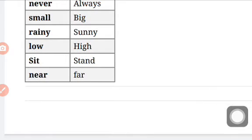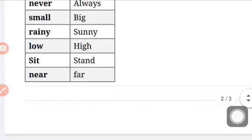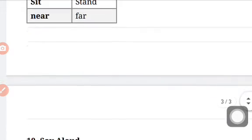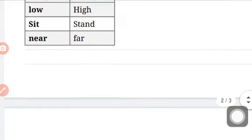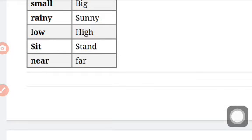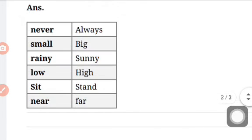So opposite is high. H-I-G-H, high. Sit. S-I-T, sit. Opposite word is stand. S-T-A-N-D, stand. Then near. N-E-A-R, near. Its opposite word is far. F-A-R. Let's read again: never, always. Small, big. Rainy, sunny. Low, high. Sit, stand. Near, far.